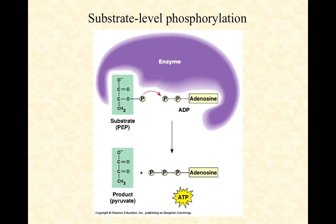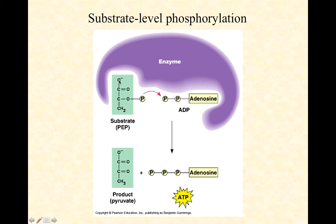Substrate level phosphorylation: the term 'substrate' refers to one of the organic molecules that is an intermediate in the pathway — a substrate of the enzyme. The enzymes involved have two binding sites in their active site: one for the phosphorylated substrate — in this case phosphoenolpyruvate (PEP), a phosphorylated carbon molecule — and another pocket for an ADP molecule. That enzyme then cleaves the phosphate from the substrate.